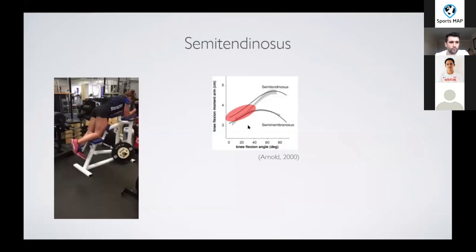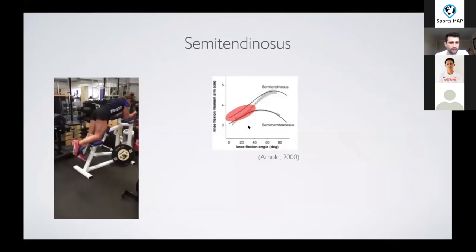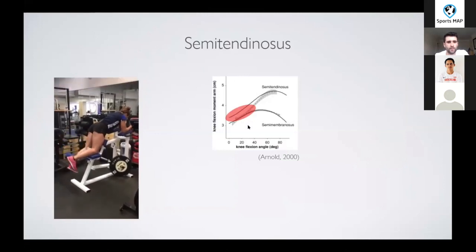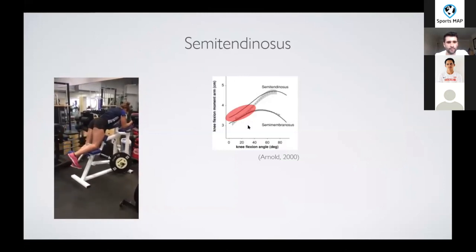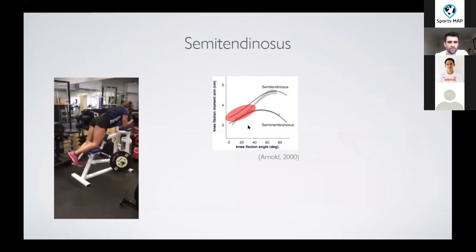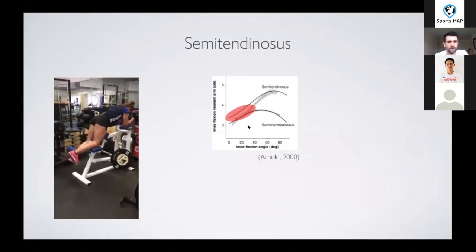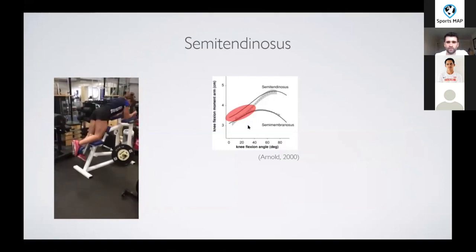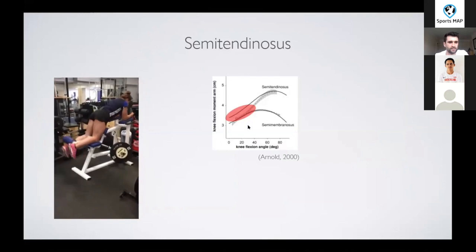Similarly, if we're trying to target a muscle like semi-tendinosus in a leg curl, you can see on the right here that the semi-tendinosus moment arm increases into knee flexion, whereas the membranosis is a little bit more even. And the semi-membranosis has a big physiological cross-sectional area, so it has the potential to produce an awful lot of force in extension.